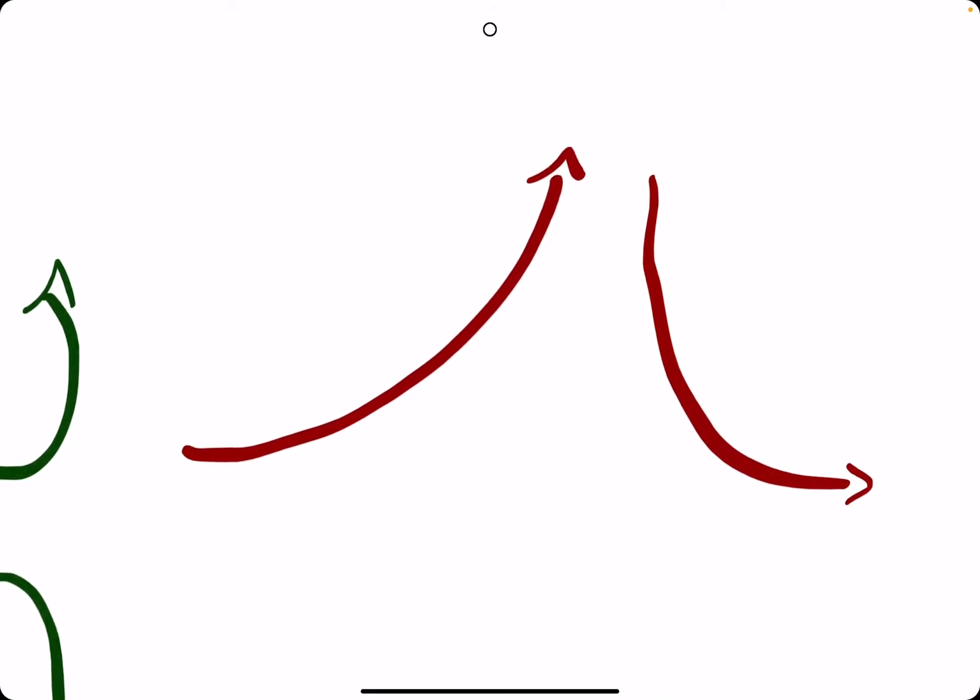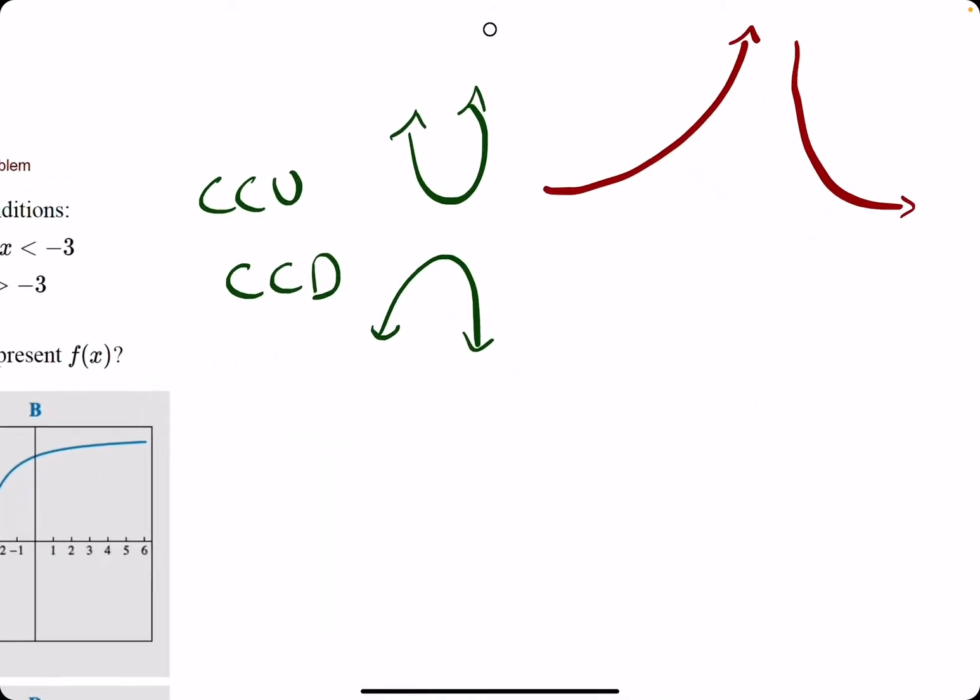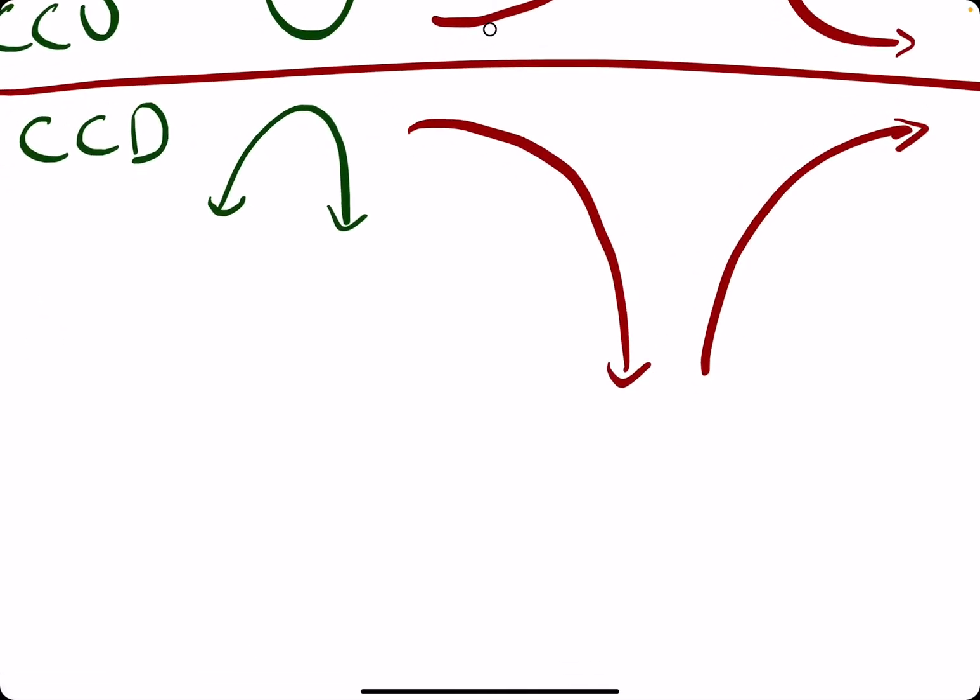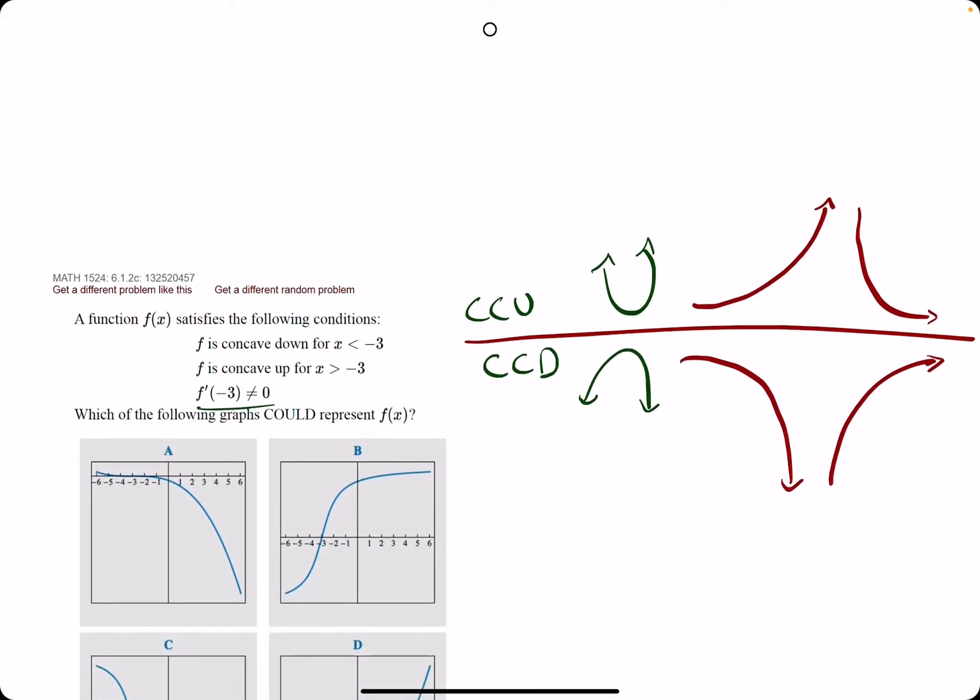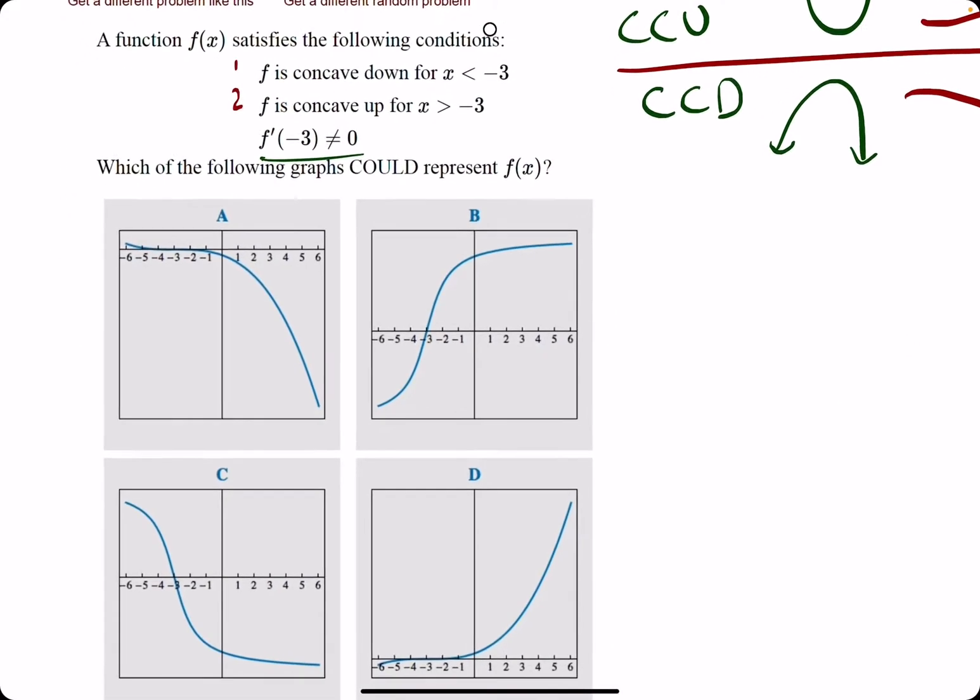This is the other half of concave up, so we could see either of these red curves and call them both concave up. Same thing with concave down—we could see this or this. So you get the idea. This down here is concave down, this is concave up.